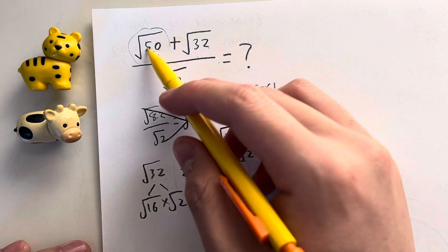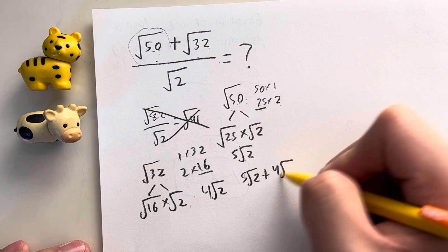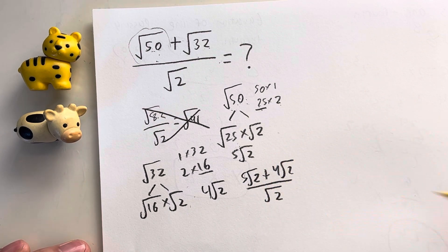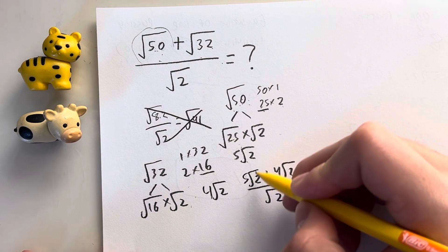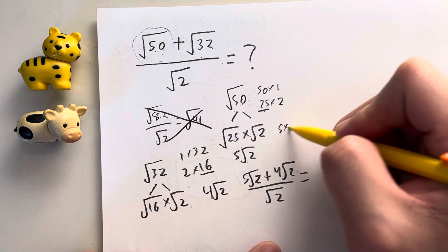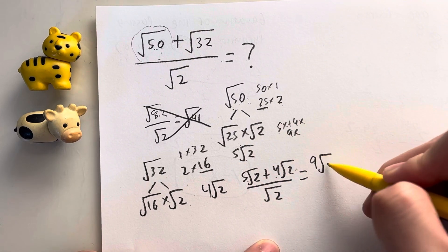So on top, I have square root of 50, which is 5 root 2 plus 4 root 2 divided by root 2 at the bottom. And then that's pretty easy to simplify because 5 plus 4, you can treat the square root of 2 as x's. So 5x plus 4x is just equal to 9x. So 5 plus 4 is just 9 root 2.